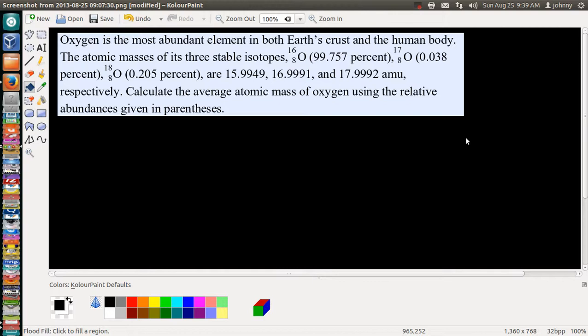Let's get started. Oxygen is the most abundant element in both Earth's crust and the human body. The atomic masses of its three stable isotopes are: isotope 16 oxygen, isotope 17 oxygen, and isotope 18 oxygen. And these are their percentages. Let's see what we can do with this.